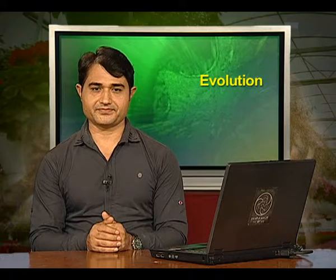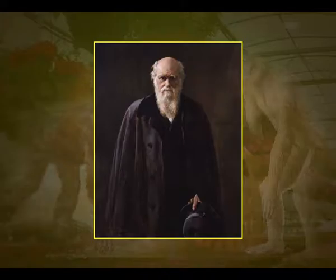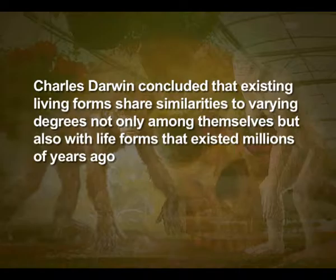All these ideas were strongly challenged during the 19th century. Based on observations made during a sea voyage on a sail ship called HMS Beagle round the world, Charles Darwin concluded that existing living forms share similarities to varying degrees not only among themselves, but also with life forms that existed millions of years ago.